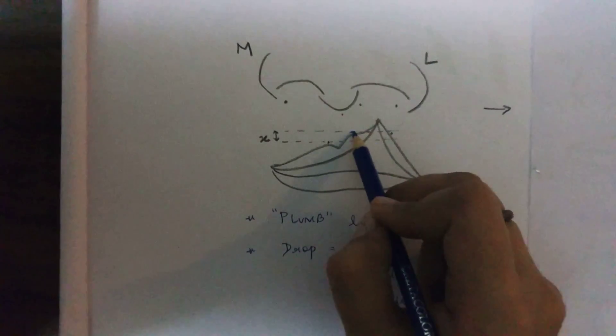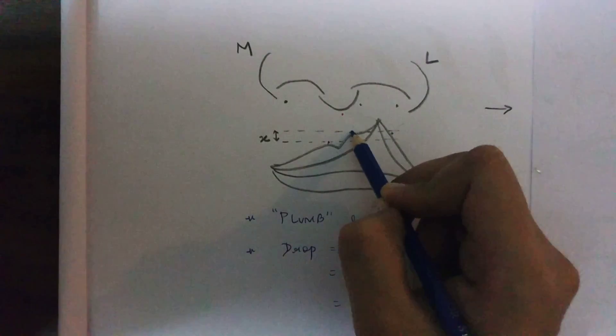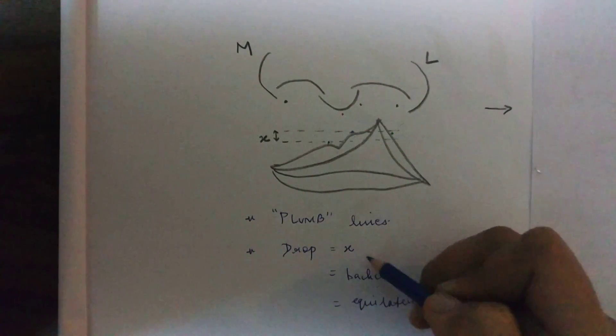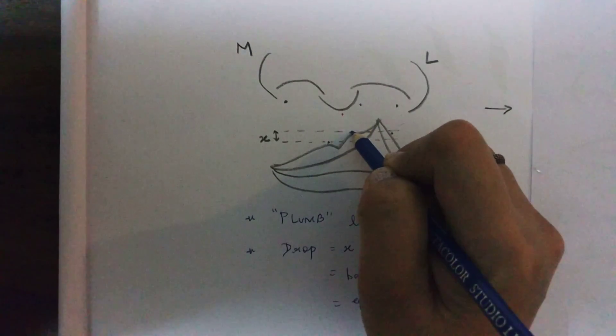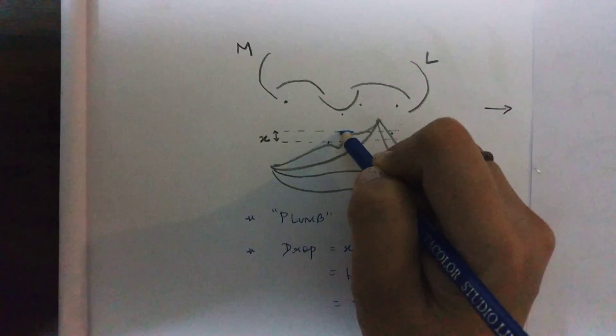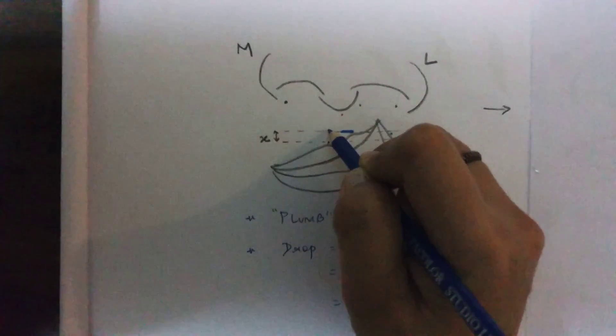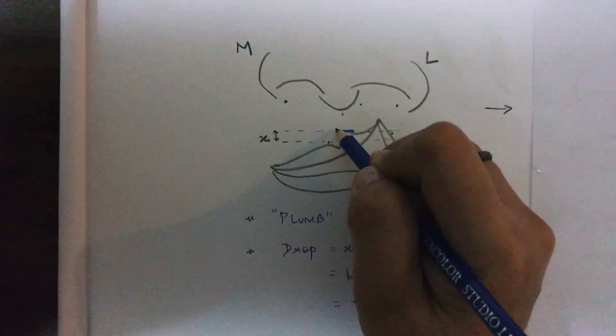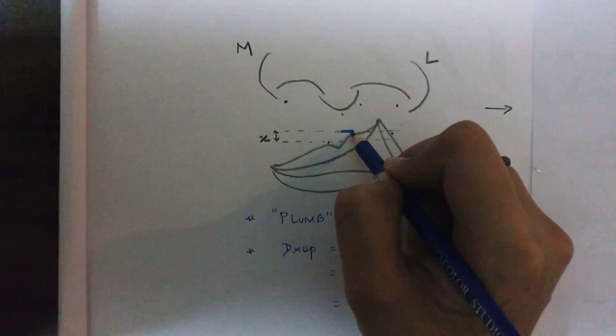After marking the plumb lines and calculating the drop, that is x, we begin from the future peak of the cupid's bow, which will be for the cleft side, that is 0.3. Now from this 0.3, the first thing we need to make is a back cut. Now this back cut is equal to x, which is equal to the drop. So this back cut is made at 90 degrees from 0.3. Now this back cut should not cross the midpoint of the base of the columella, so it should not go on to the non-cleft side. According to x, we have now marked this back cut.